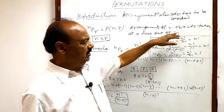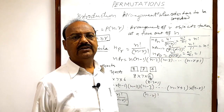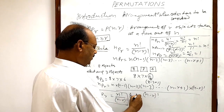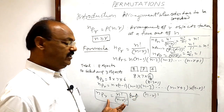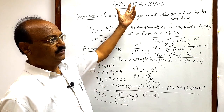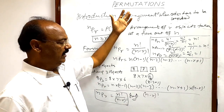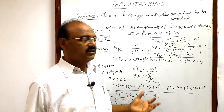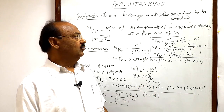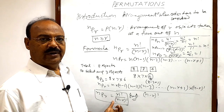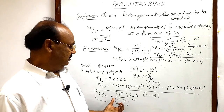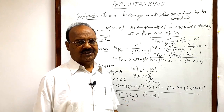These are some important but simple results to remember. They may be used when solving problems, and the formula nPr = n!/(n−r)! is very important for this topic of permutations. In the next video, we will start solving problems using this formula. I hope you have understood well — thank you very much for watching.